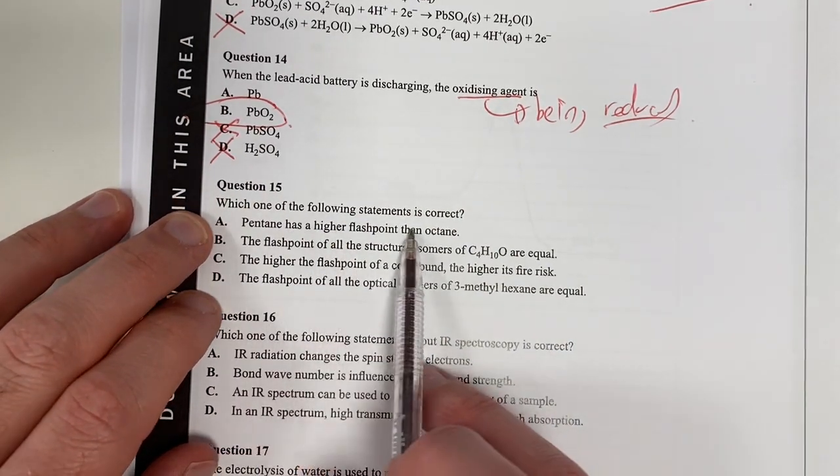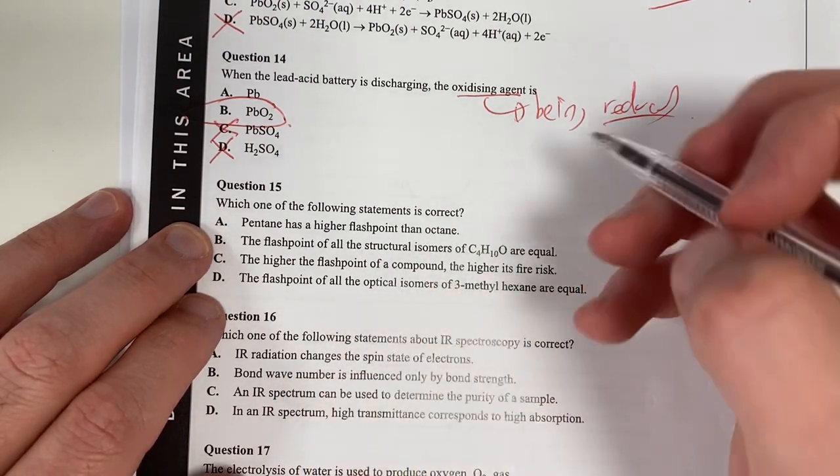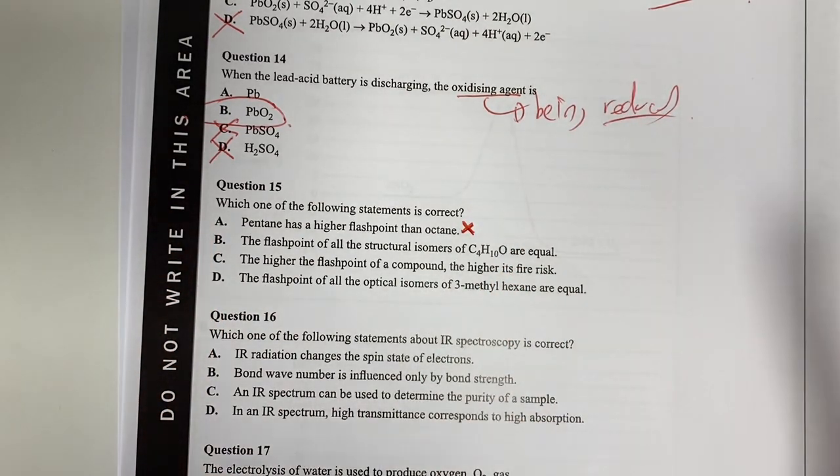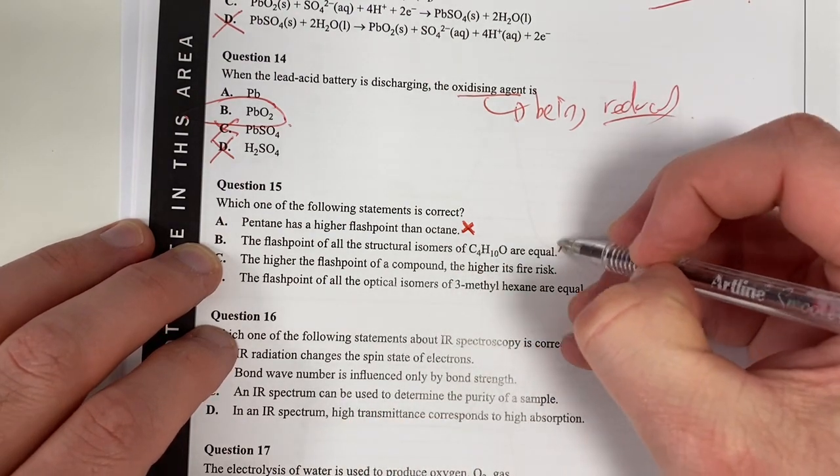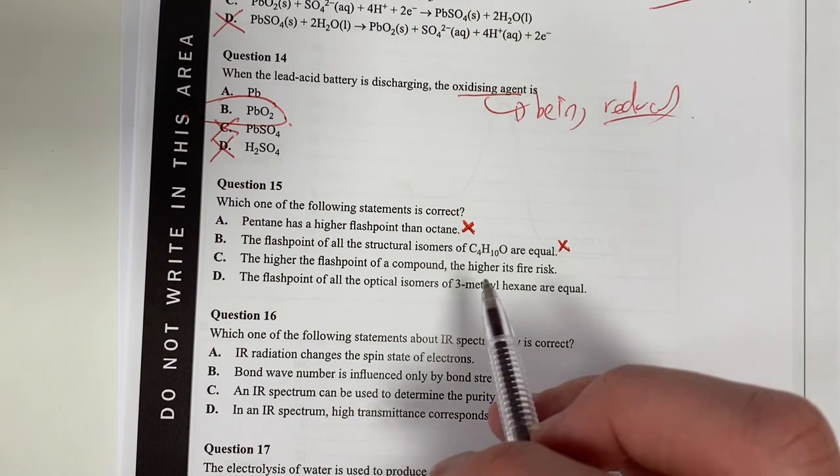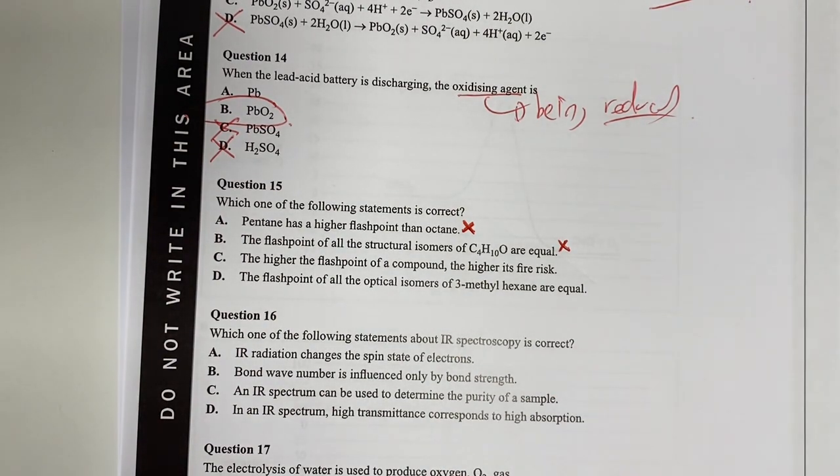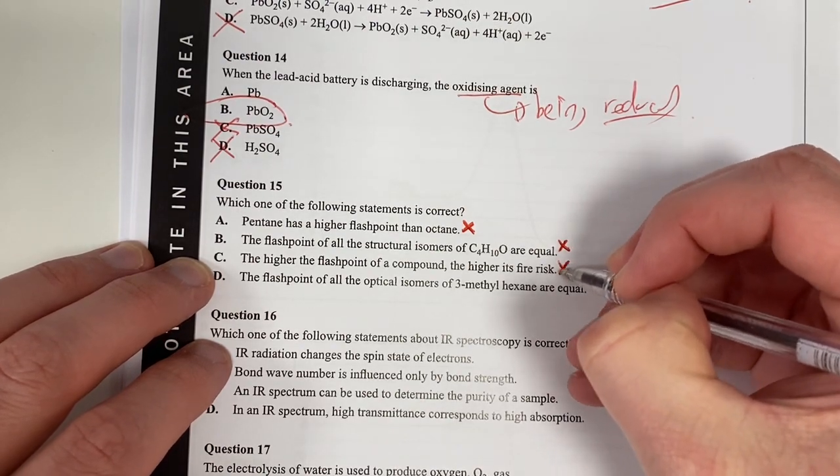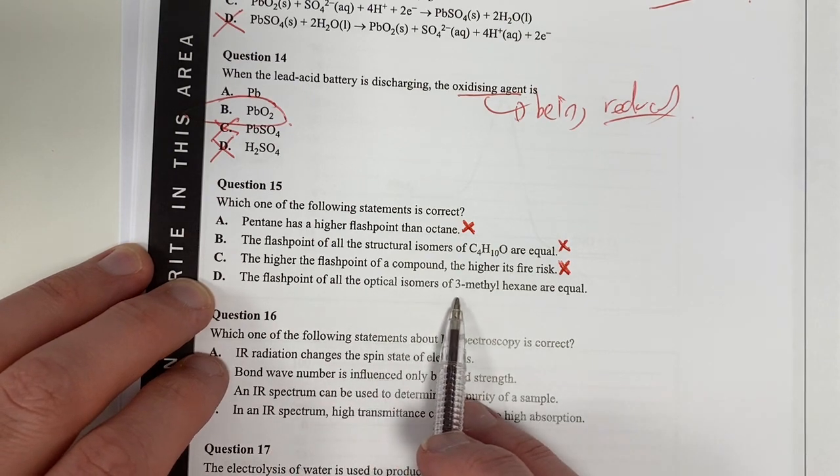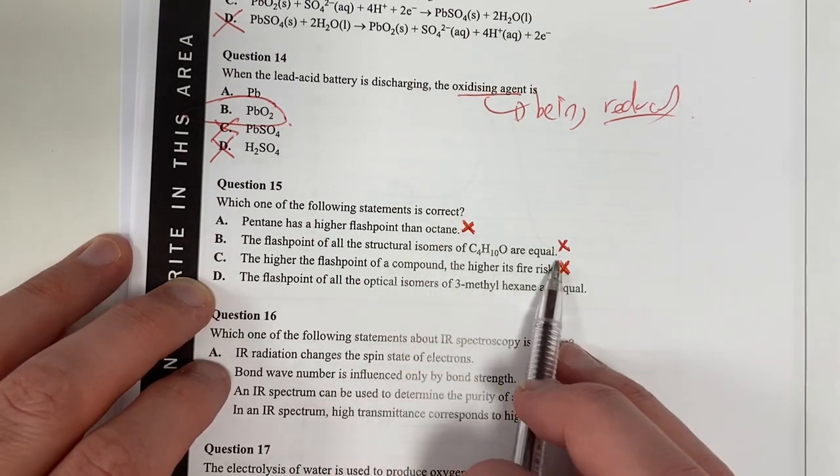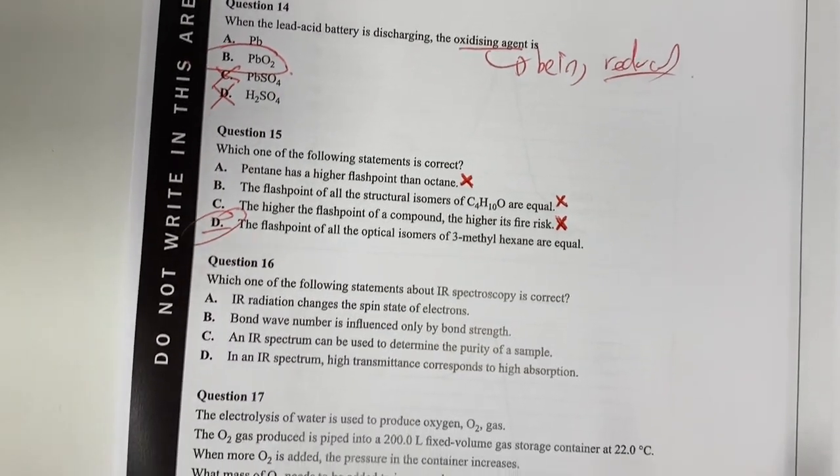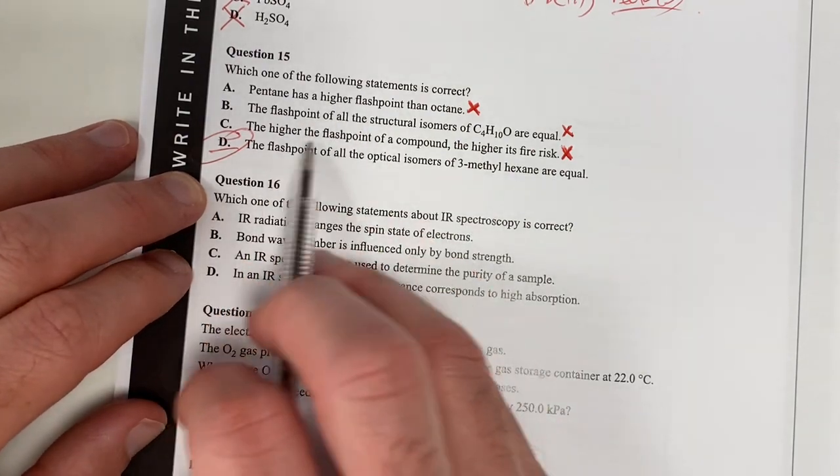Question 15. Which of the following statements is correct? Pentane has a higher flashpoint than octane. No. It would have a lower flashpoint because it's a smaller molecule. Smaller molecule means it would be a gas more often which means it would have a lower more easy to burn. The flashpoint of all structural isomers of that are equal. That would not be right either because even slight changes in the structure of compounds changes the intermolecular forces so therefore will impact on its ability to melt or burn. The higher the flashpoint for a compound the higher the risk of fire. That is not true either. It is the lower the flashpoint which makes it easier for it to burn. The flashpoint of all optical isomers of that is equal. I'm not 100% sure on that but these three are definitely wrong so I'm going to say that's right. Optical isomers must be quite similar then in my opinion. Not in my opinion in my logical reasoning of that question.